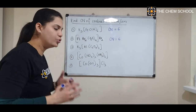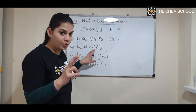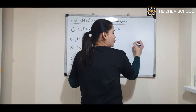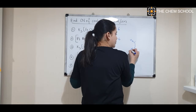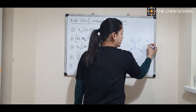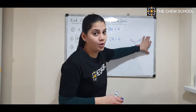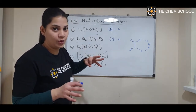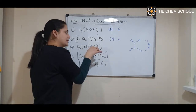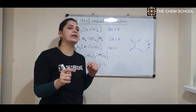Next, Al is forming bonds with oxalato. You have to remember that oxalato is a bidentate ligand, meaning each ligand forms two coordinate bonds. The oxalato structure has C=O, C=O, O⁻, and O⁻ — both oxygen atoms form coordinate bonds. There are three oxalato ligands, and each forms two coordinate bonds, so 3 × 2 = 6. The coordination number of aluminium here is six.